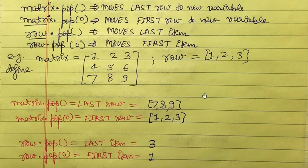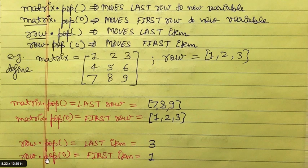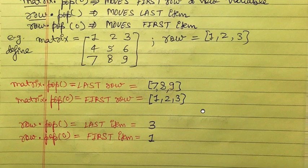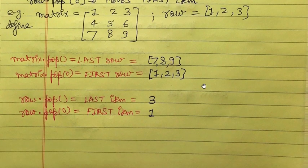If you want to experiment, open a Python IDE, define the matrix and row, and print the results of these pop operations. Understanding this pop operation is crucial — it makes the problem easy. Otherwise, this problem is classified as LeetCode Hard and is quite tricky.